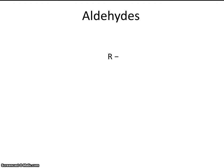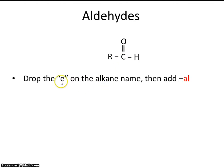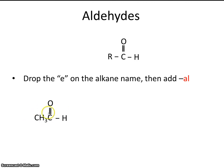Aldehydes. An aldehyde looks like this — a doubly bonded oxygen, and then a hydrogen coming off of the carbon. To name them, drop the 'e' in the alkane name, then add the suffix '-al.' For example, this molecule has two carbons — remember to count the carbon bonded to the doubly bonded oxygen. Two carbons is ethane, so we drop the 'e' and add '-al,' giving us ethanal.